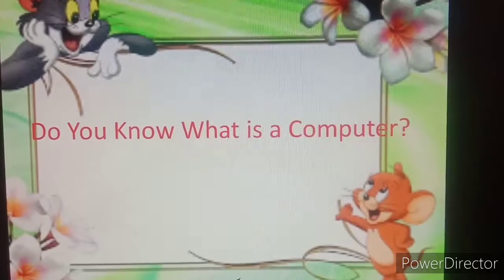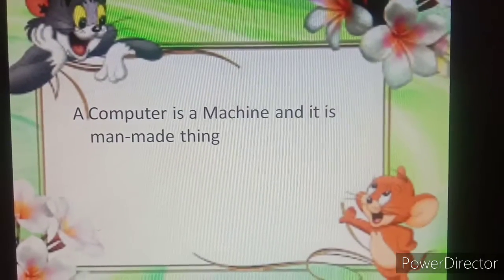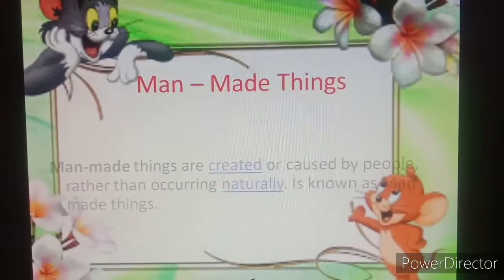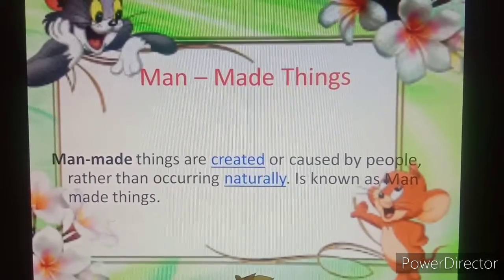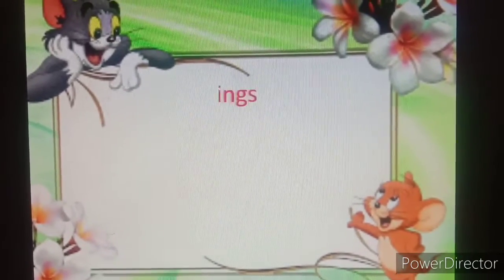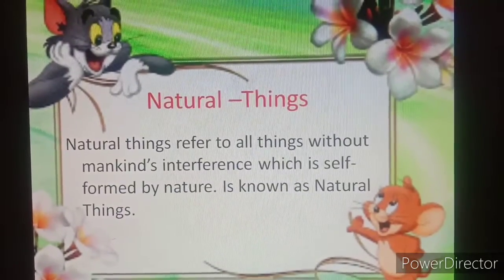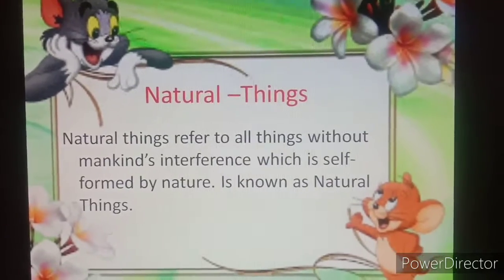Do you know what is a computer? A computer is a machine and it is a man-made thing. Do you know what is man-made things? Man-made things are created or caused by people rather than occurring naturally. Natural things refer to all things without mankind's interference, which are self-formed by nature.